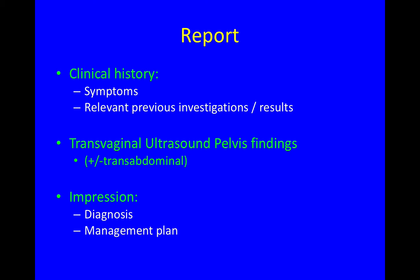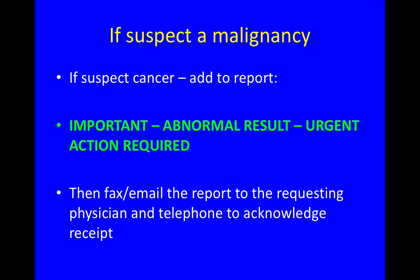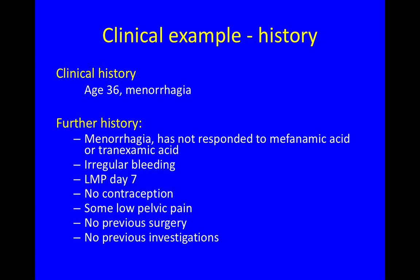Your report can then contain your history, the pelvic ultrasound findings, and an impression including diagnosis and management plan. If you suspect a malignancy, you need to add to the report in bold: 'Important Abnormal Result — Urgent Action Required,' and send that urgently to the requesting physician and phone them to make sure they received the report.